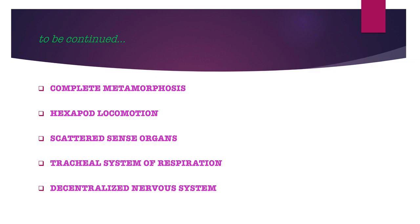Scattered sense organs: the distribution of sense organs across all parts of the body prevents them from being damaged or caught by enemies. Tracheal system of respiration: this system facilitates direct transfer of adequate oxygen to breathing tissues. Next is decentralized nervous system: insects can be artificially stimulated to walk, feed or mate even if some parts of the body are damaged or removed.